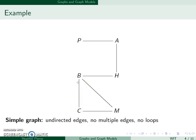This is actually called a simple graph. We have undirected edges - our edges do not have arrows on them. We don't allow for multiple edges, and there are no loops.